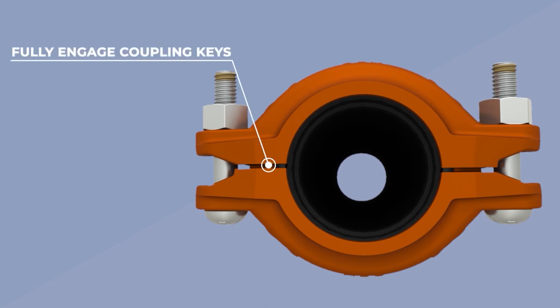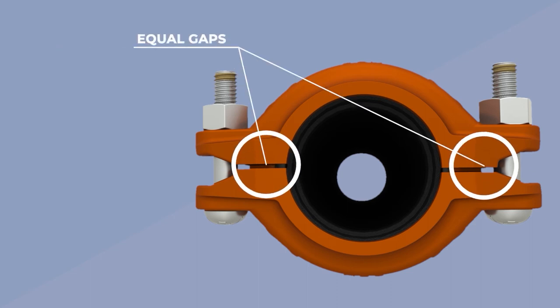Visually inspect the pipe joint to assure the coupling keys are fully engaged in the pipe grooves. The bolt pads are to have equal gaps on each side of the coupling.